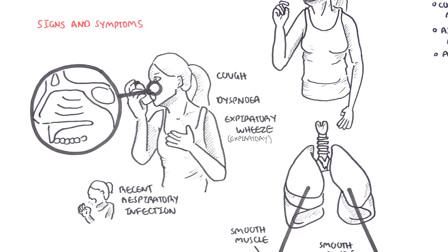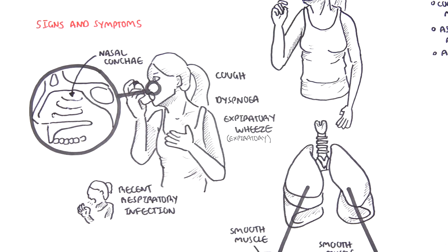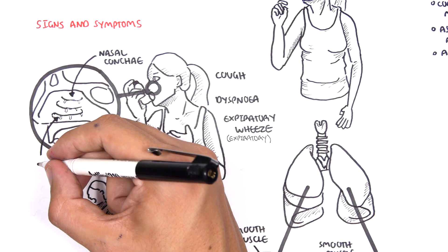There are some things you can also see inside the nose. On the nasal conchae you may see nasal polyps which can be a sign or a risk factor.